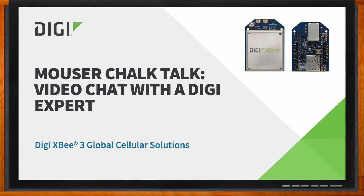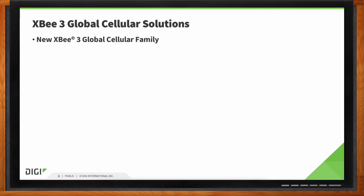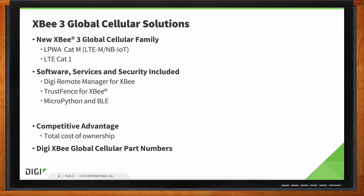Hi Alec, thanks for joining me. So we're talking about global cellular solutions today — what does Digi offer in this realm? Digi has historically provided many cellular solutions from a box product standpoint. Today, what we're excited about is a new offering from an embedded standpoint. We have two new solutions: one is an XB3 cellular LTE-M/NB-IoT product and also an XB3 cellular Cat 1, to grow our global cellular family.